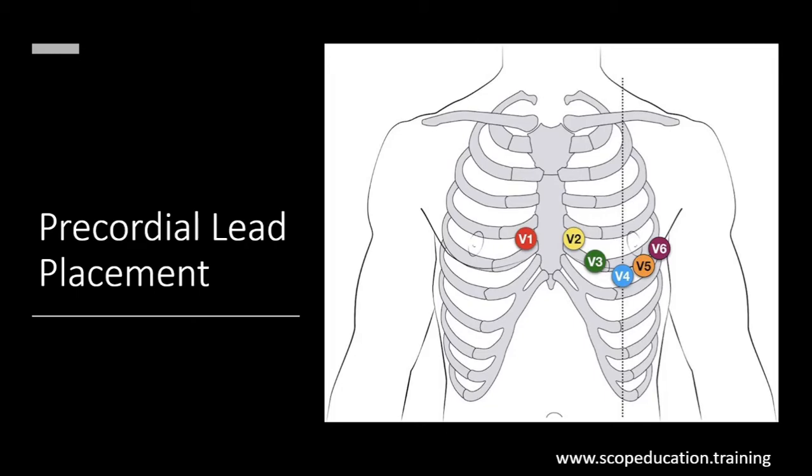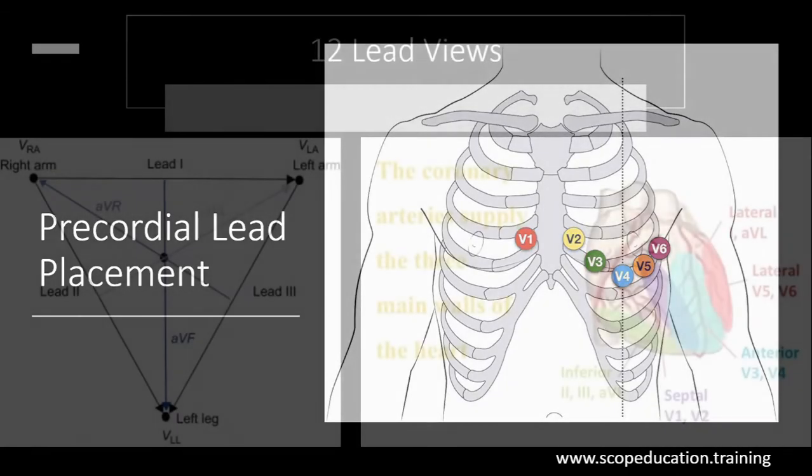So V1 is going to be in the fourth intercostal on the right side of the sternum. V2 is going to be the fourth intercostal left side of the sternum. We're going to skip V3 real quick and we're going to put V4 midclavicular and the fifth intercostal space, usually underneath the nipple. And between V4 and V2, we're going to put V3. For V5, it's going to be the fifth intercostal space anterior axillary line, and V6 is our fifth intercostal space mid axillary.